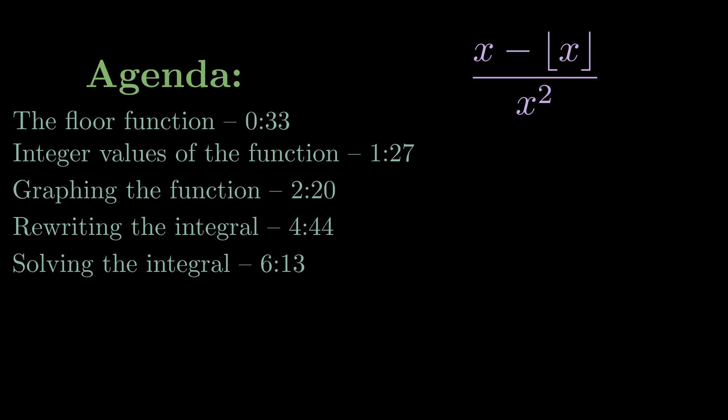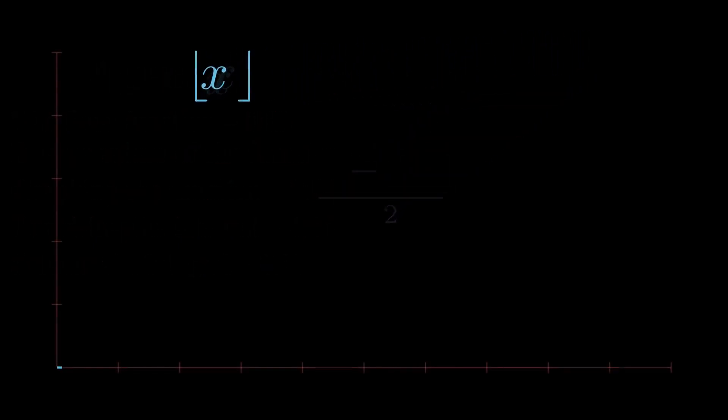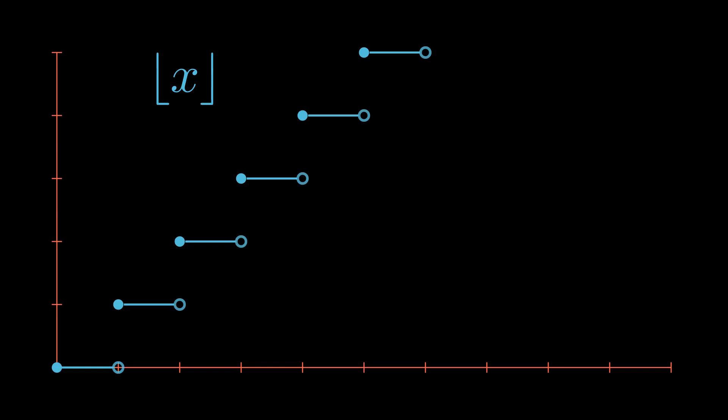In case you are unfamiliar, the little brackets around the second x denote the floor function. This function simply rounds down any given number to the next integer. For example, the floor of 3.2 is 3, the floor of 4.7 is 4, the floor of 2.999 is 2.